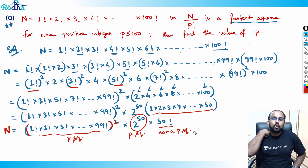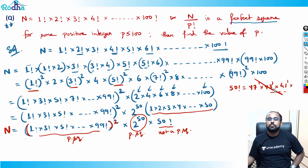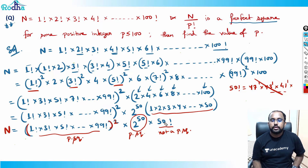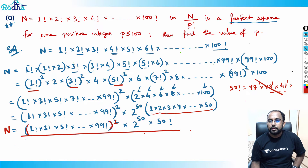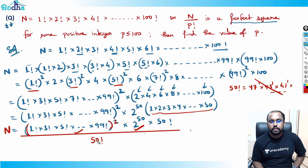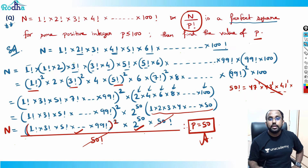However, 50 factorial is not a perfect square, because 50 factorial contains prime numbers like 47 and 43 only once — many primes appear with odd powers, so it can't be a perfect square. So if we divide n by 50 factorial, the 50 factorial cancels out, and n divided by p factorial becomes a perfect square. Therefore the value of p is 50.